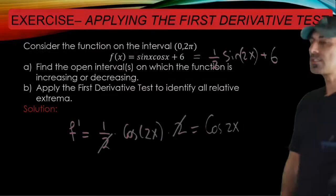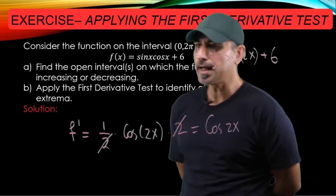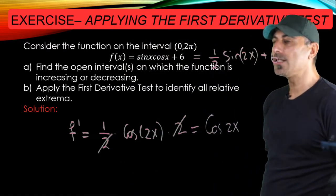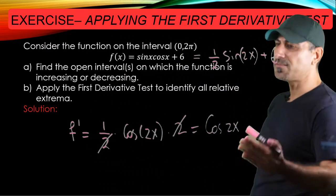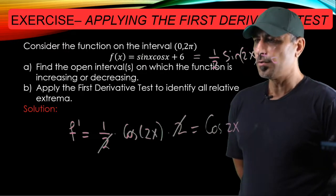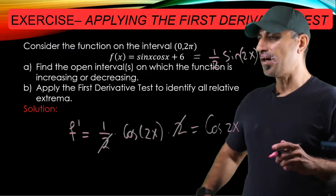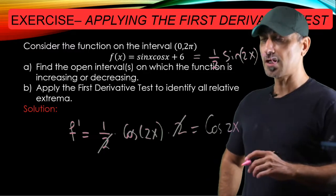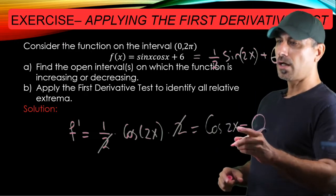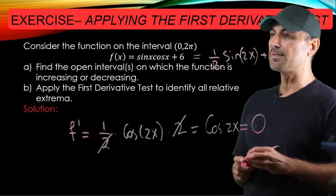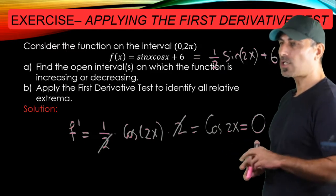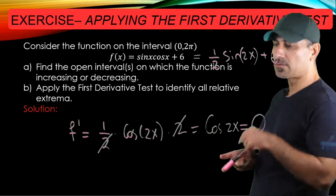So the critical points are the points that make f prime either zero or undefined, but cosine 2x is defined for every single x on the real line. So the only critical points that we can find would come out of setting this function to zero. So in the next step we're going to try to solve cosine 2x equals zero for x.